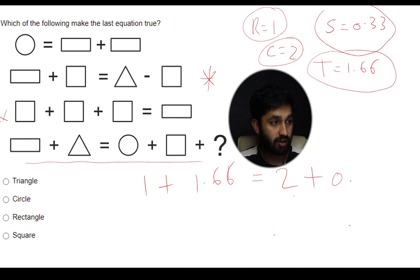So let's simplify this equation a little bit more. So 2.66 because I add 1 plus 1.66 equals 2.33 plus our unknown shape. Now let's rearrange this again.